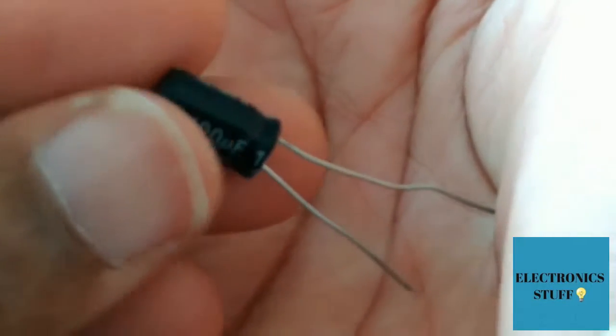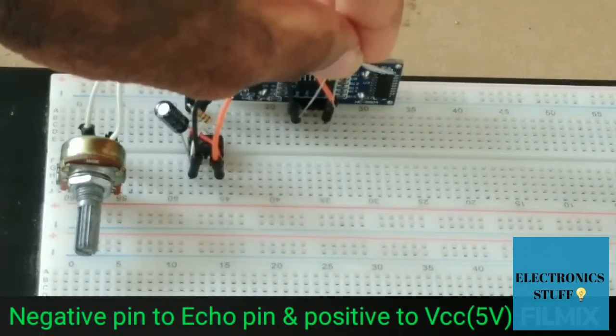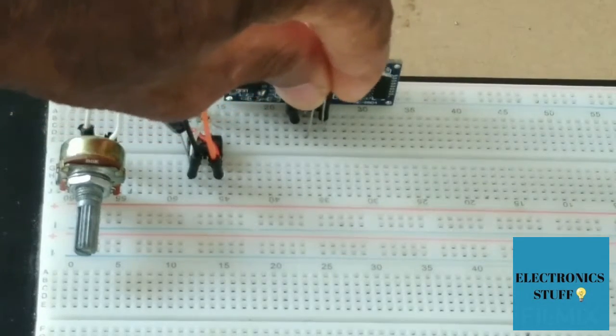The minus of this capacitor is going to echo pin of that sensor and the positive pin to VCC.